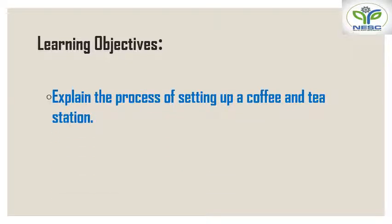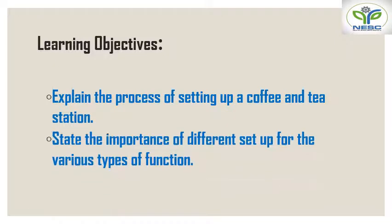The learning objectives from this unit will be: first, explain the process of setting up a coffee and tea station — you will be able to understand the different procedures of setting up a station. Second, state the importance of different set-ups for the various types of functions — you will understand the importance of different set-ups according to the type of function.